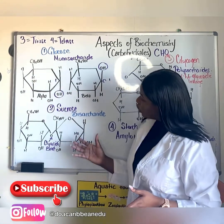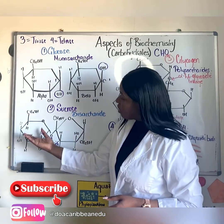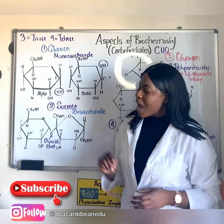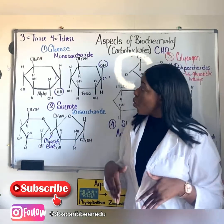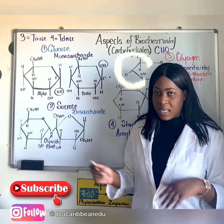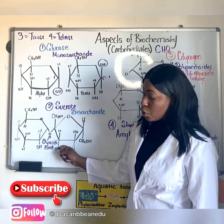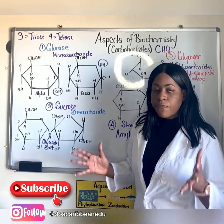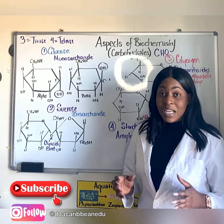Some sugars have a functional group in their skeleton. For example, glucose has an aldehyde group in its structure, so we would say glucose is an aldose or an aldohexose. Another example is fructose — there is a ketone functional group, so we say fructose is a ketose or a ketohexose.